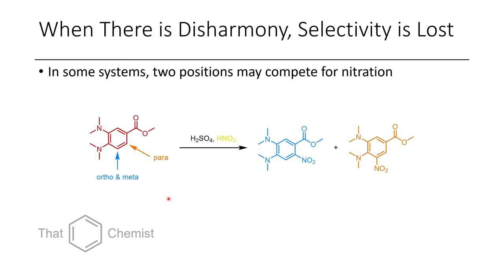Sometimes if you have disharmony among directing groups, you can lose selectivity for where the nitro group will go. In this case with a 1,2-bis-dimethylaniline species, the para position can be selected by one aniline group, but the other aniline group directs ortho, and the ester can direct meta. Both positions are rather activated. This is an anecdotal experience of mine where I tried forming the selective para-nitro product but actually obtained a mixture of two products and was unfortunately not able to separate them.